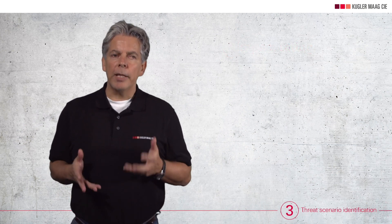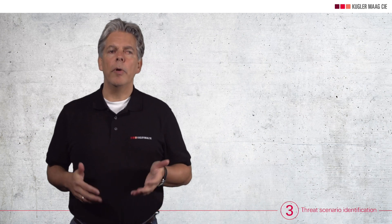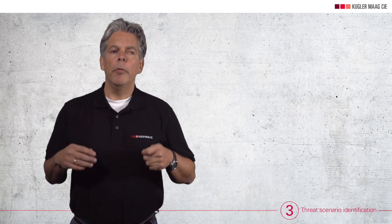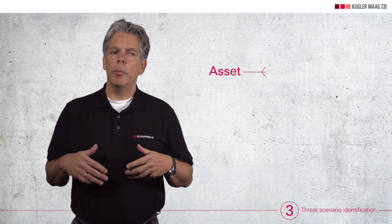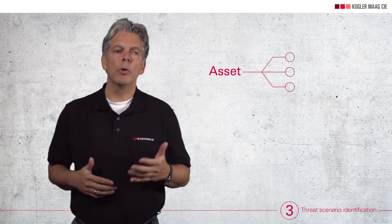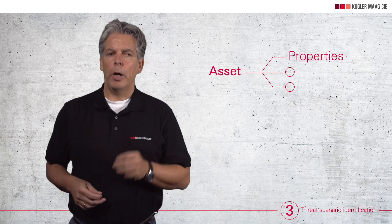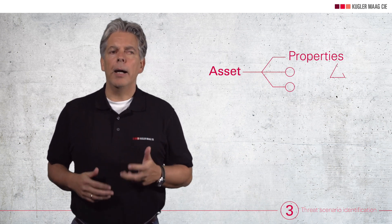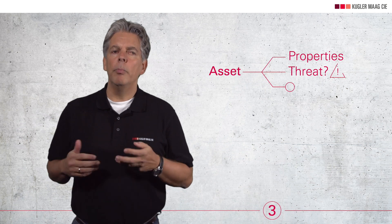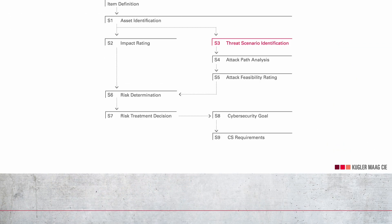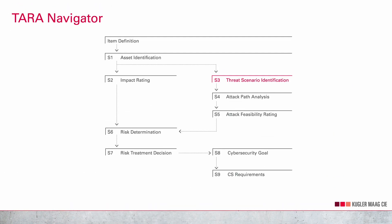Number 3: the next step is about the identification of our threat scenario. In the first step, we spoke about the potential damage — for example, caused by a compromised cybersecurity property. Now we look at the selected assets again and ask what threat scenario may arise. To make this clear, we take a compromised switch as an example. This damage scenario results in a possible threat scenario, namely caused by spoofing or flooding the CAN bus.